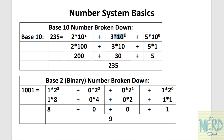10 to the first power is itself, so it's 10. And anything to the zero power is 1. So 5 times 1 is 5, 3 times 10 is 30, and 2 times 100 is 200. So 200 plus 30 plus 5 is 235. That's how things work in our numbering system — each digit is a higher power of 10, because we have 10 different digits, 0 through 9.